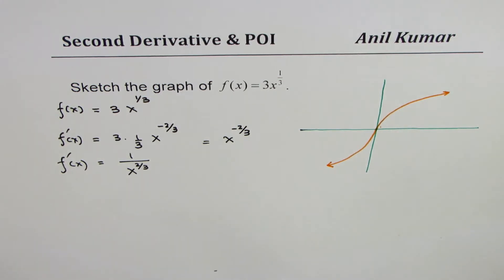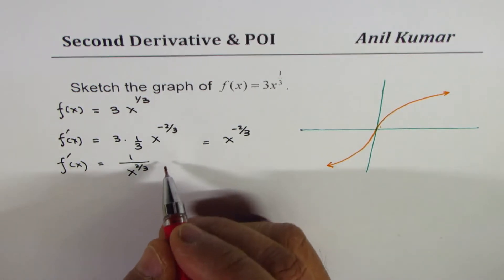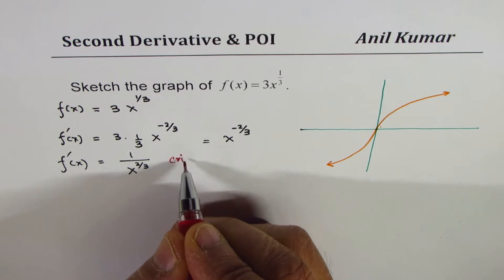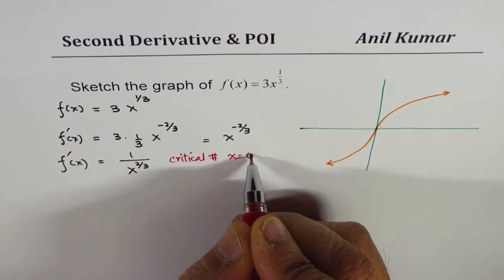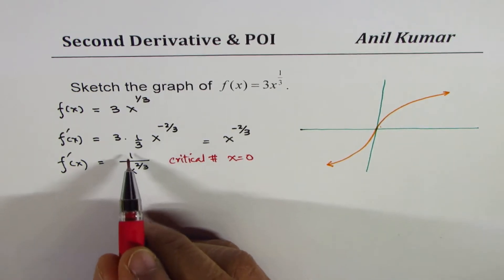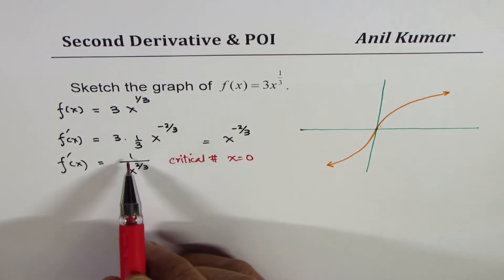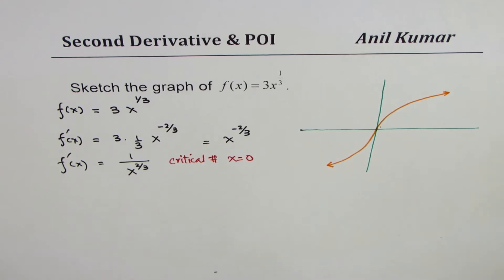Now, critical point at this stage, you can always analyze. So critical number is x equals to 0. That means it is undefined at that point. If you analyze this number, let's do it here.